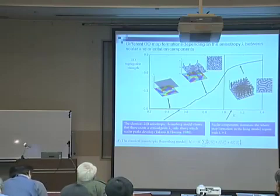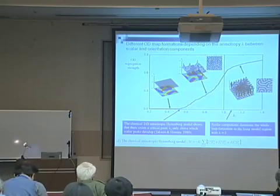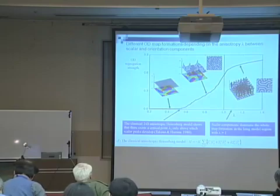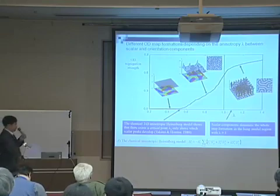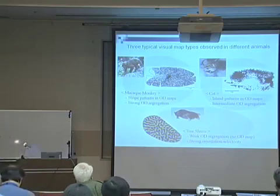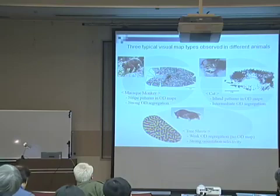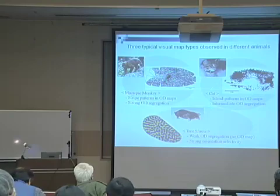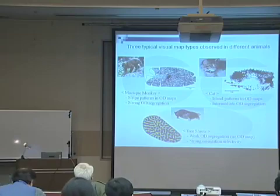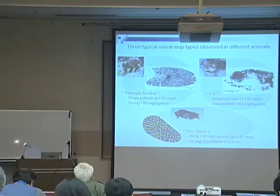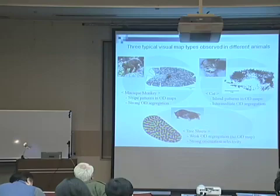And below the critical point, no OD map patterns develop. These results show you that the brain can have three different kinds of pattern types, and we can find corresponding data in animal experiments. This shows the three typical map patterns observed in different animals. Cats have the configuration corresponding to the Ising model region. And in the case of ferrets, they have both patterns in OD maps. Tree shrews have no OD maps. Instead, they have strong orientation selectivity. Both reflect the orientation preference map like that of tree shrew.